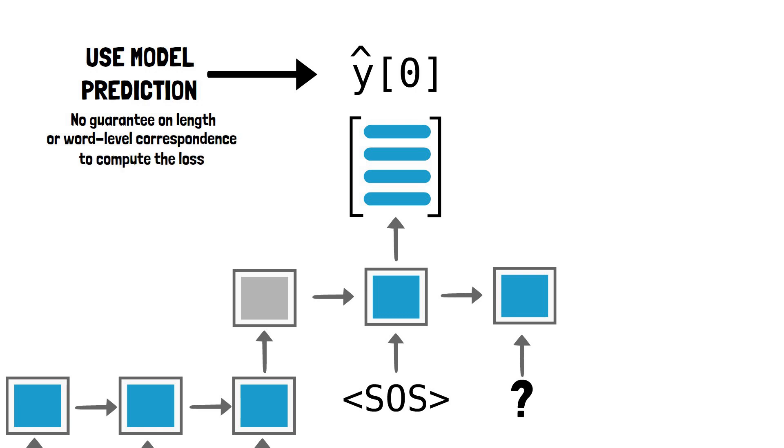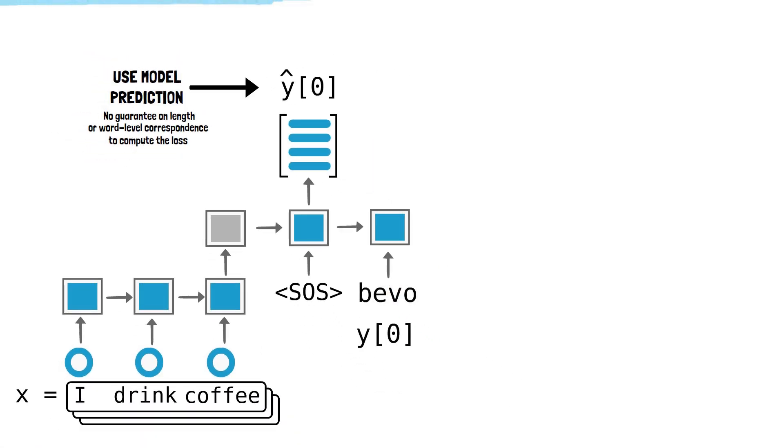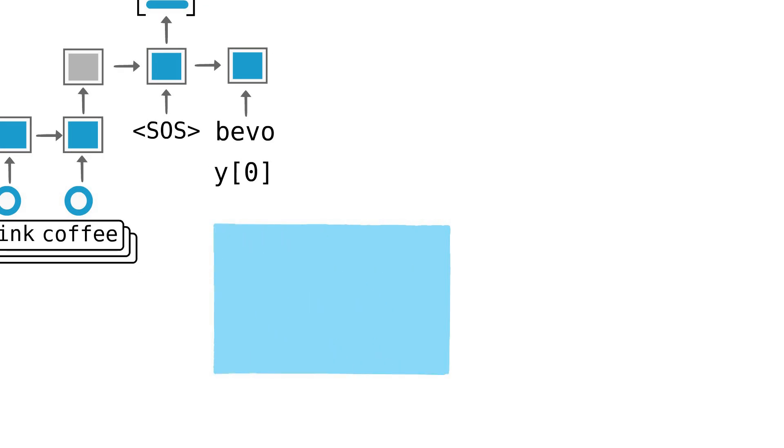Instead, a simple solution is to input the next token in the target Italian translation from the training set. This is called teacher forcing.